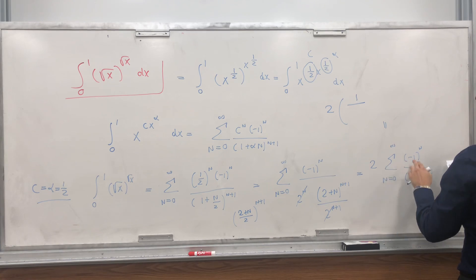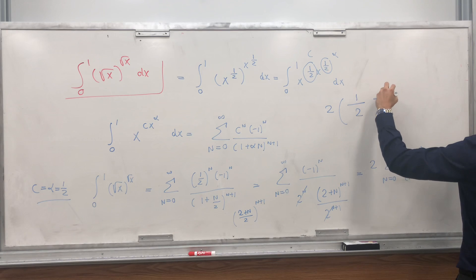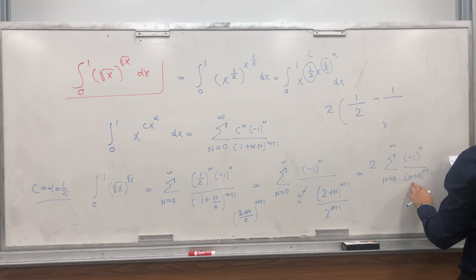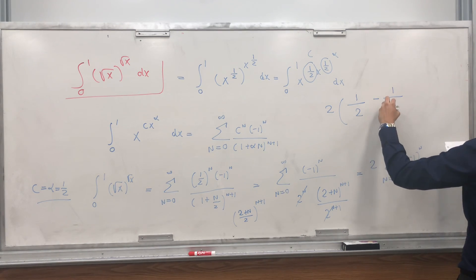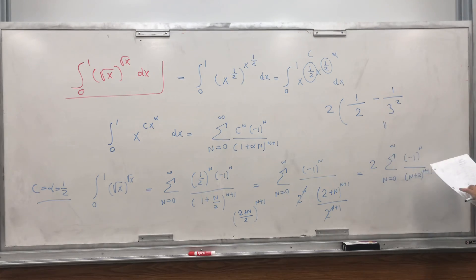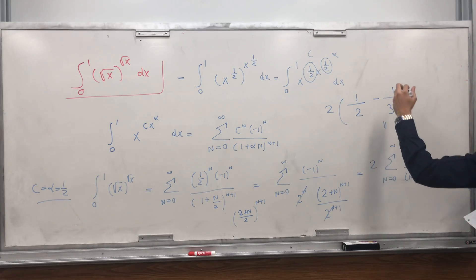Sorry. 2 times, and then 2 to the 1, and then minus 1 over 3 squared. I was confused. I did wrong in my notes, so that's all.